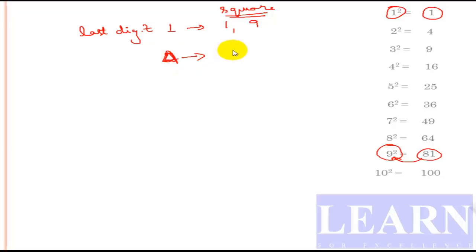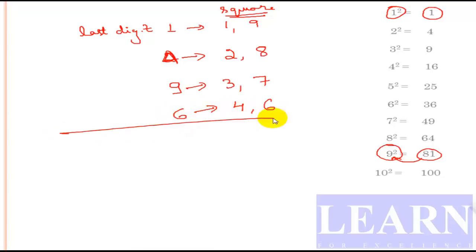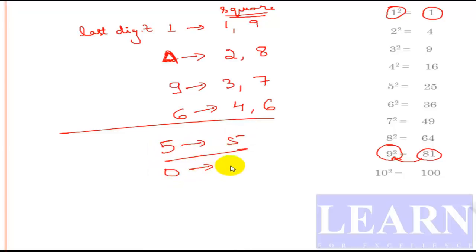If the last digit of a square is 4, then the square root's last digit can be either 2 or 8. If the last digit is 9, it can be either 3 or 7. If the last digit is 6, it can be either 4 or 6. If the last digit is 5 it will be 5, and if the last digit is 0, the square root will also end with 0. We need to remember this.